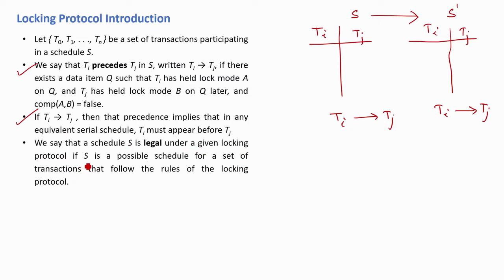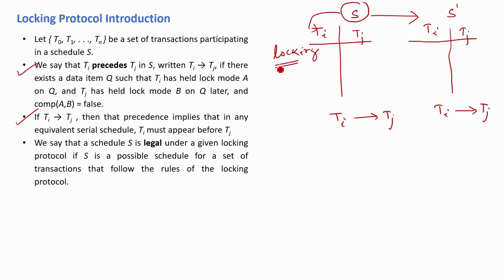The serial schedule S' is equivalent to the particular schedule S. We say that a schedule S is legal under a given locking protocol if S is a possible schedule for a set of transactions that follow the rules of the locking protocol. So S is called a legal schedule if it follows the rules of any locking protocol.